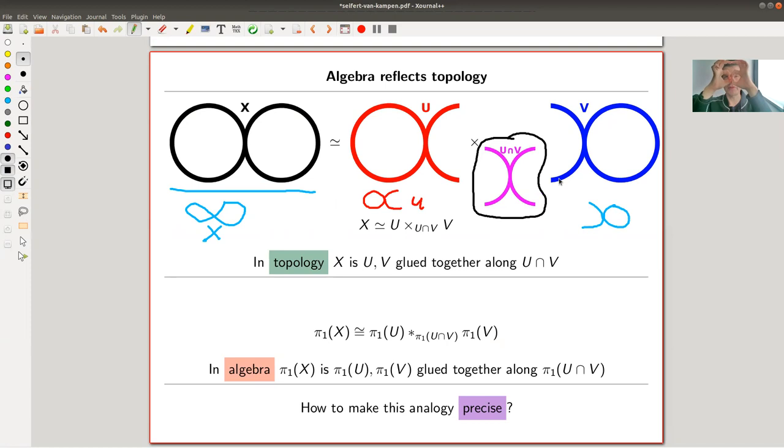You have those two circles and you make both of them a little bit bigger, going a little bit into the other circle but not too much here and here. Then they overlap and you can think of your space as being glued together from those pieces U and V along the intersection.